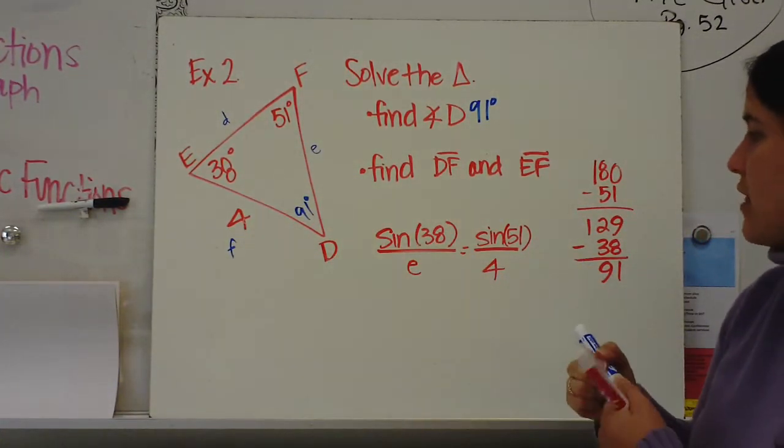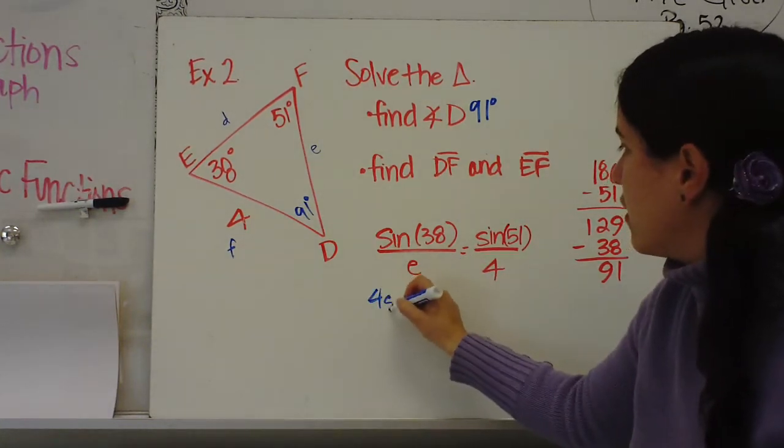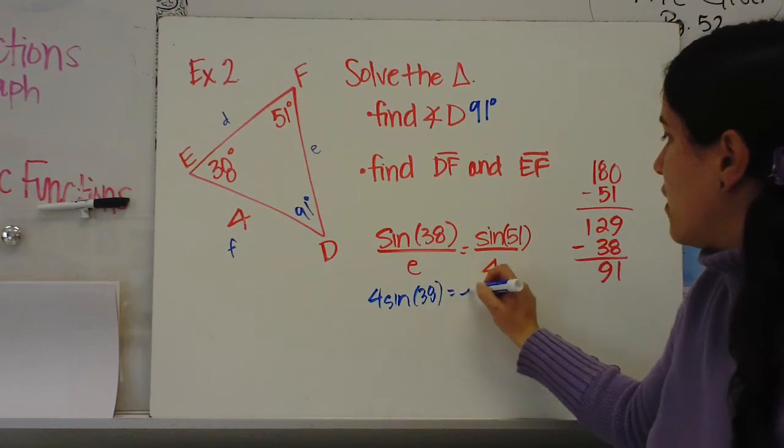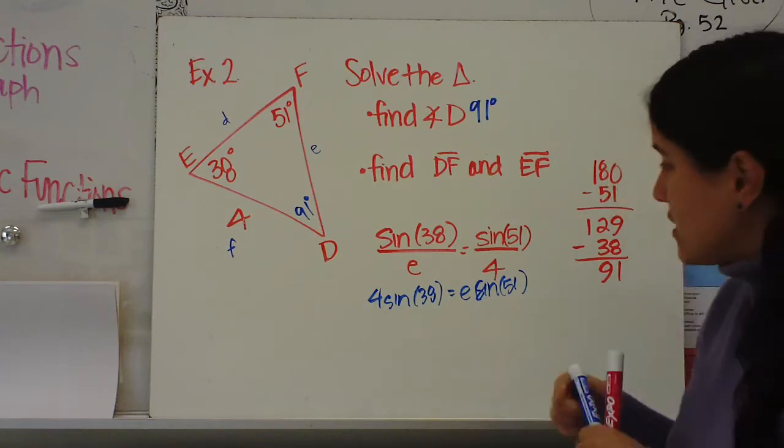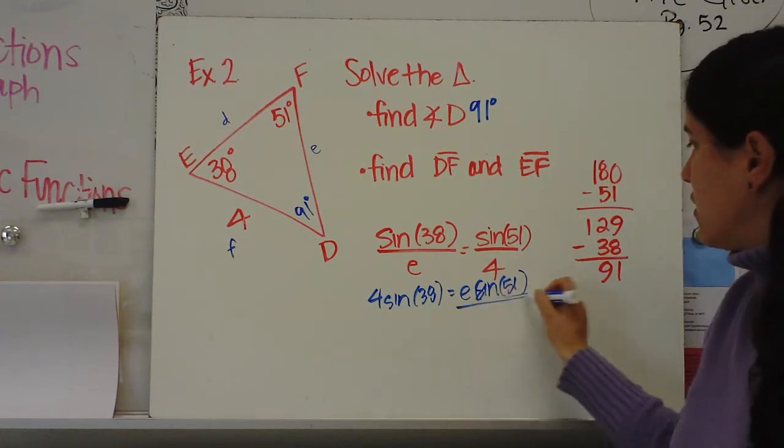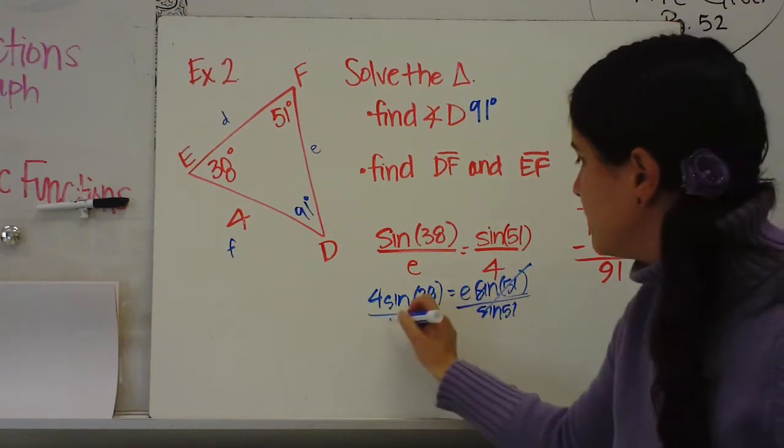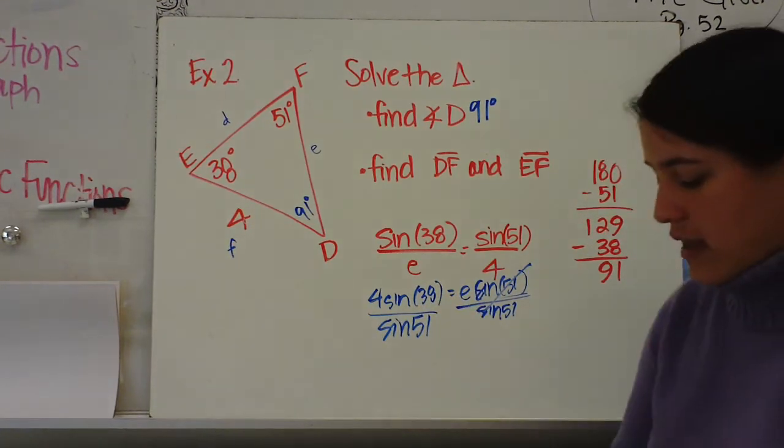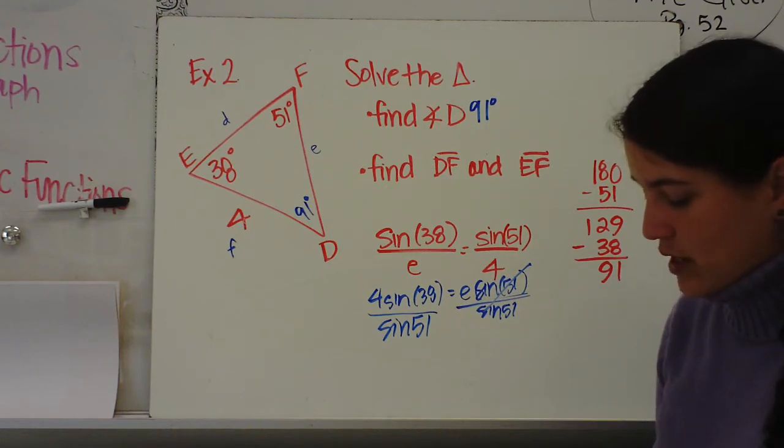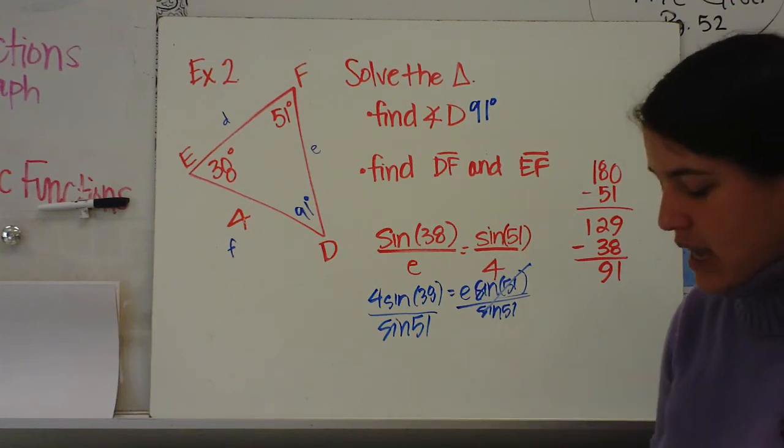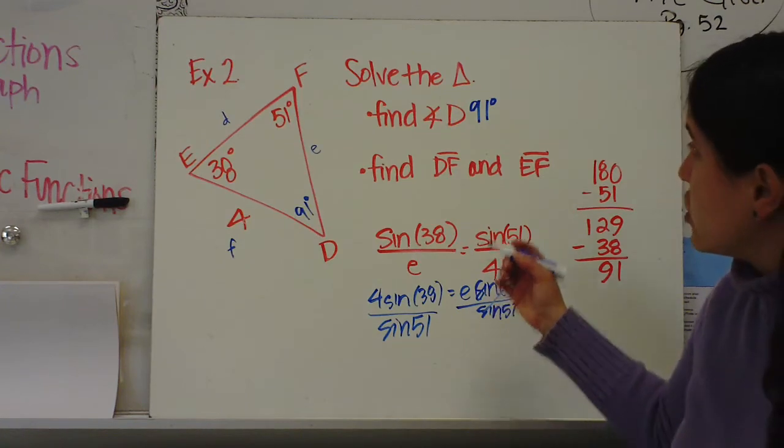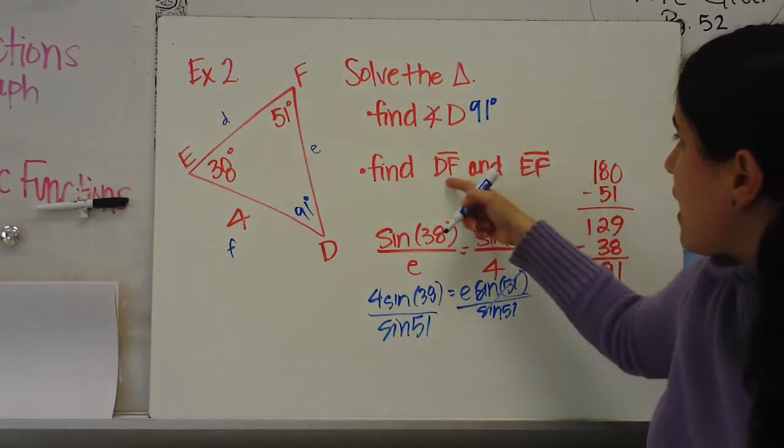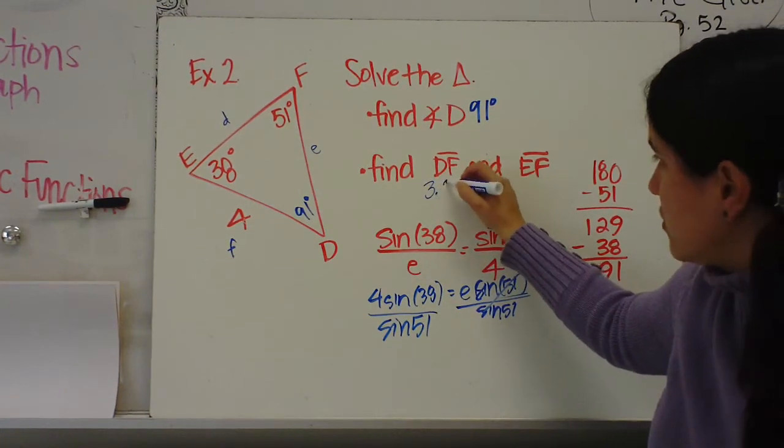So I'm going to set this up, cross multiply and I get 4 times sine of 38 equals e times sine of 51. You would divide both sides by sine of 51 to find length e. So 4 times the sine of 38 divided by sine of 51. So length e is about 3.2. So that would be DF, 3.2.